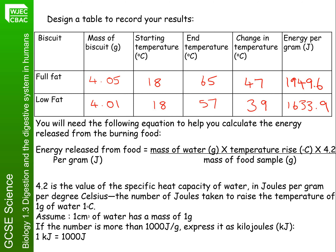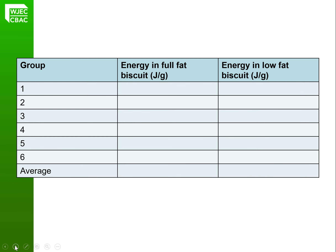As you can see from the results, there is more energy released from the full-fat biscuit than from the low-fat biscuit. We know that in our bodies we use fat as an energy store, so that explains why there was more energy in the full-fat than the low-fat biscuit. Obviously people will eat low-fat biscuits if they want to lose weight, so it makes sense that there would be less energy within them. We've only done this experiment once, so we don't know whether our results are reproducible or repeatable.